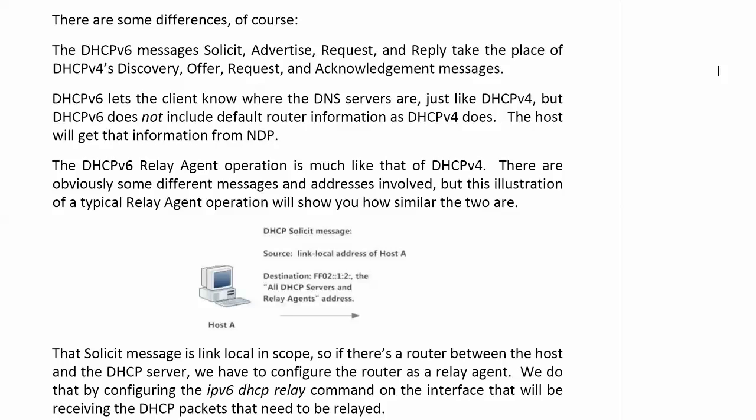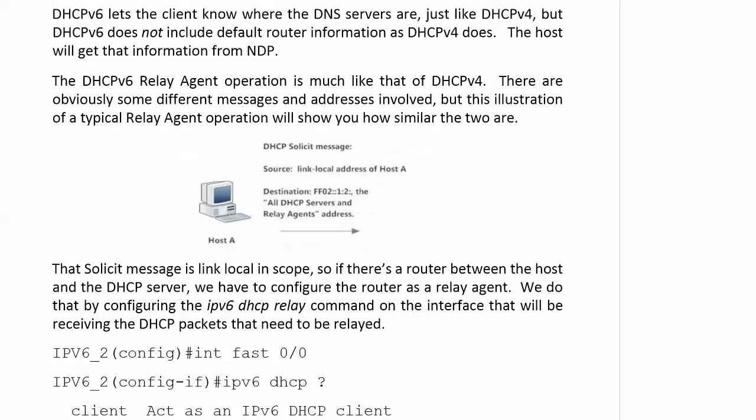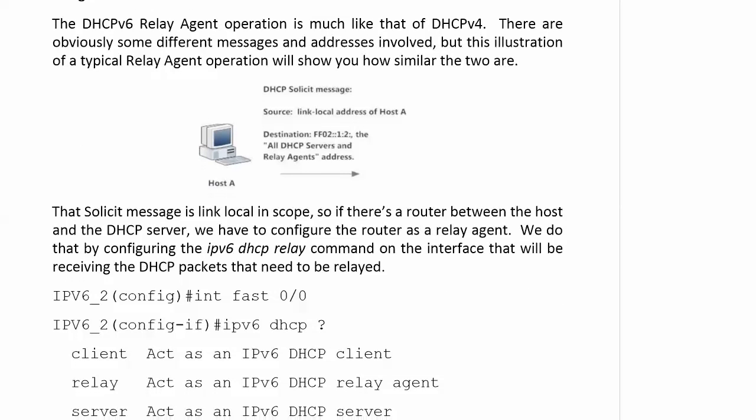The relay agent operation is a lot like that of version 4. There are obviously some different messages and addresses involved, but a typical relay agent operation shows you how similar the two are. This solicit message is link-local in scope, so if there's a router between the host and the DHCP server, by default the server has no chance to get it because the router is not going to forward a link-local message.